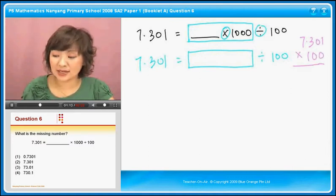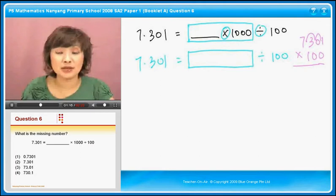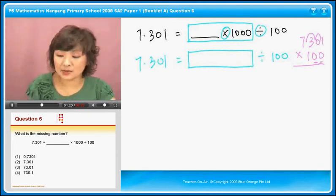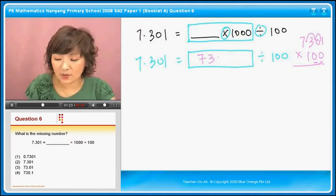Of course, I will not do my working because I know I can shift the decimal. Two rounds because of the two zeros. So my answer will be 730.1.